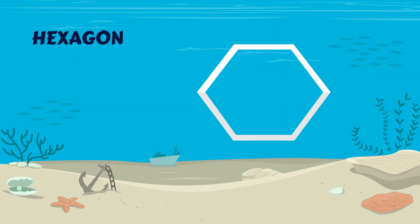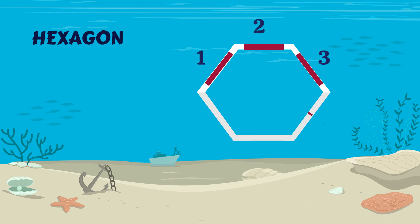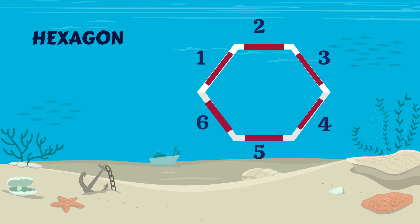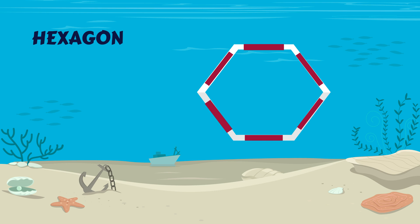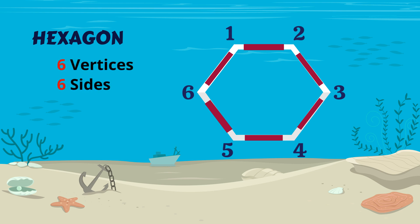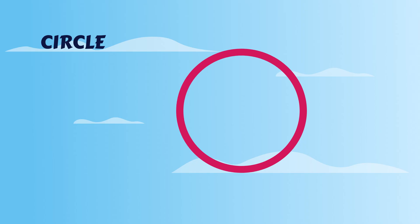Hexagon. Let's count the sides. One, two, three, four, five, six. A hexagon has six sides. Let's count the vertices. One, two, three, four, five, six. A hexagon has six vertices and six sides. Circle.